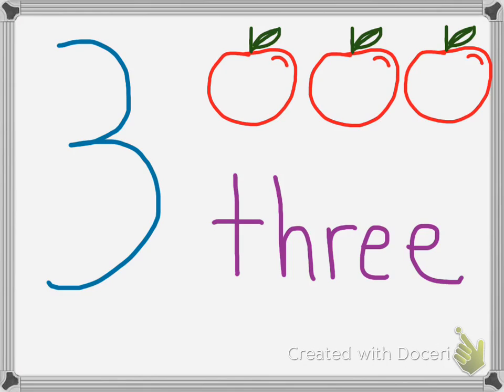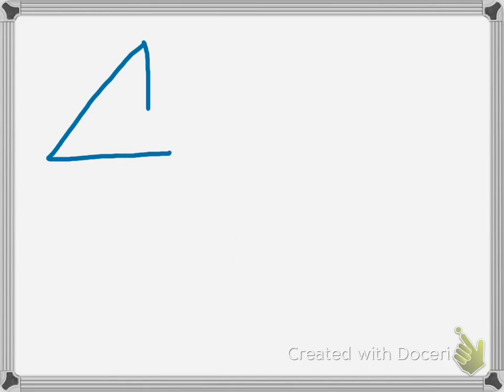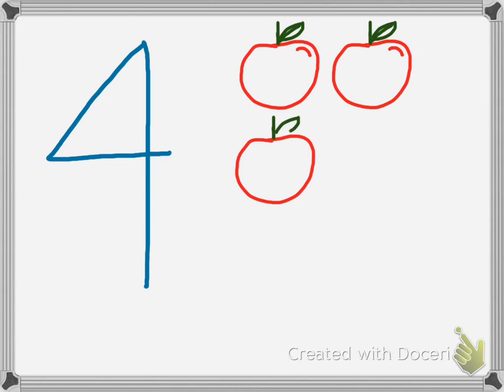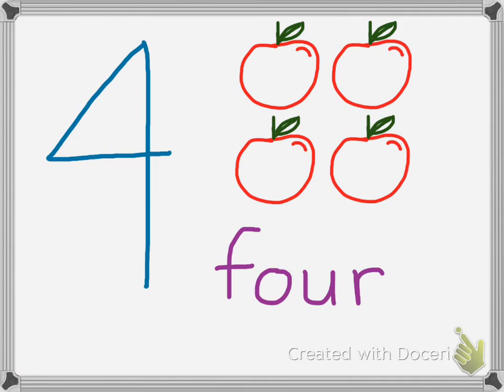After 3 comes, that's right, 4. And you can see 1, 2, 3, 4 apples. That represents the number 4. And in the written form, you can see 4. Say 4. Great!